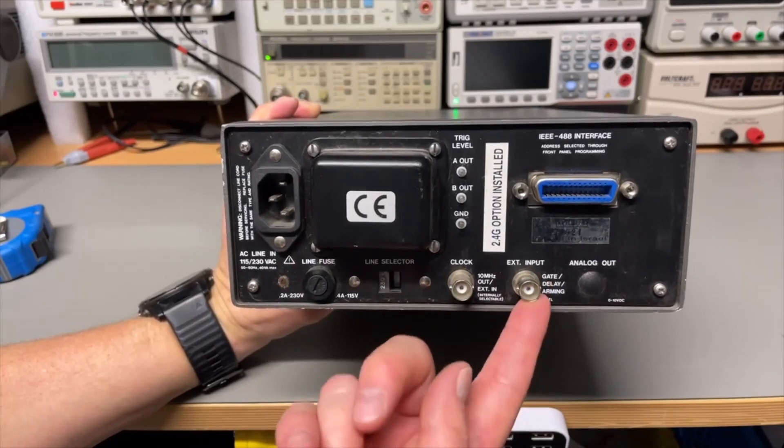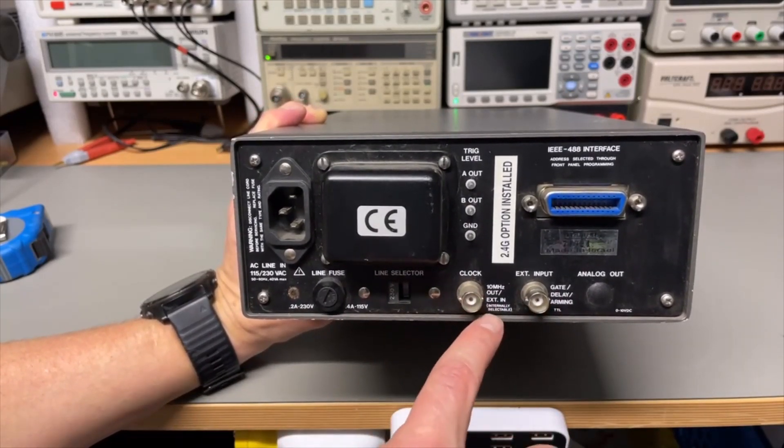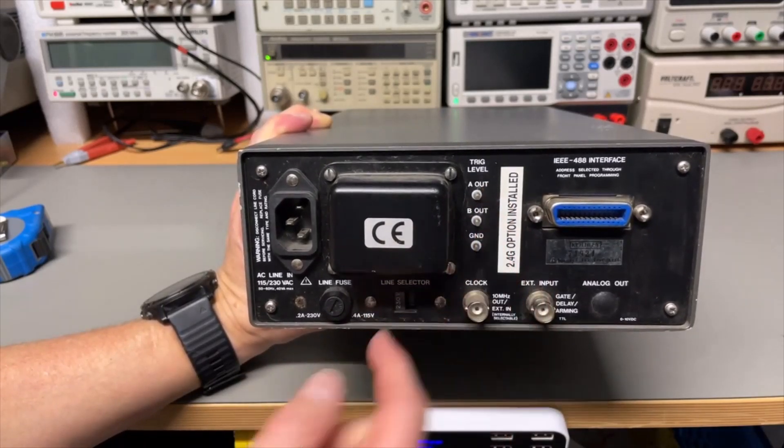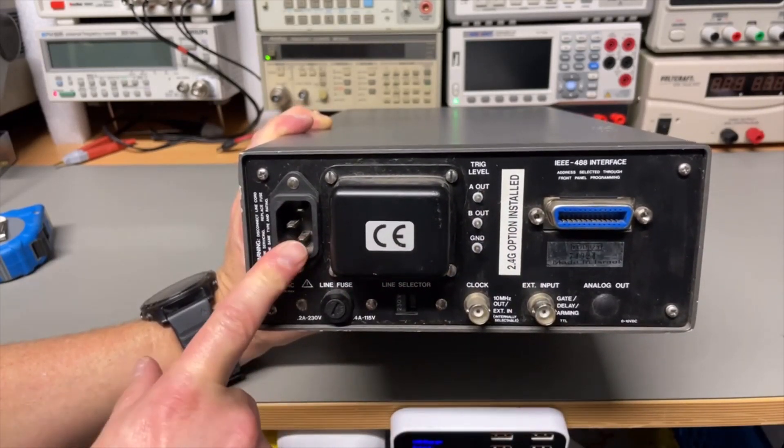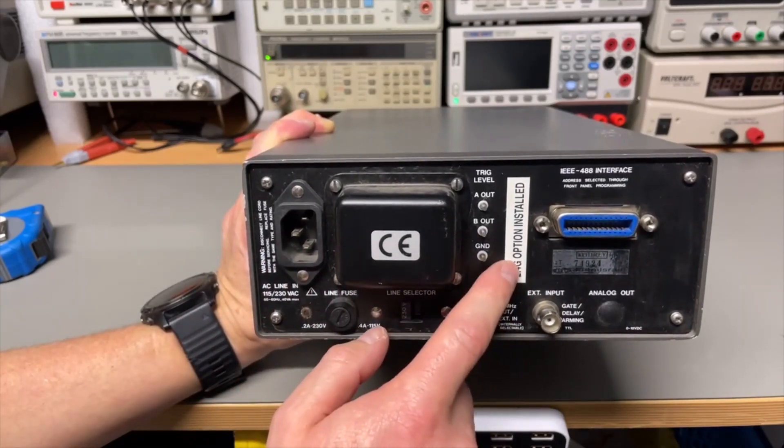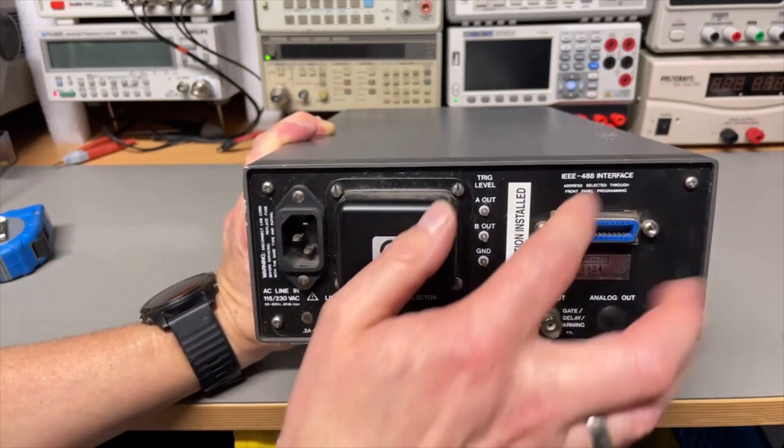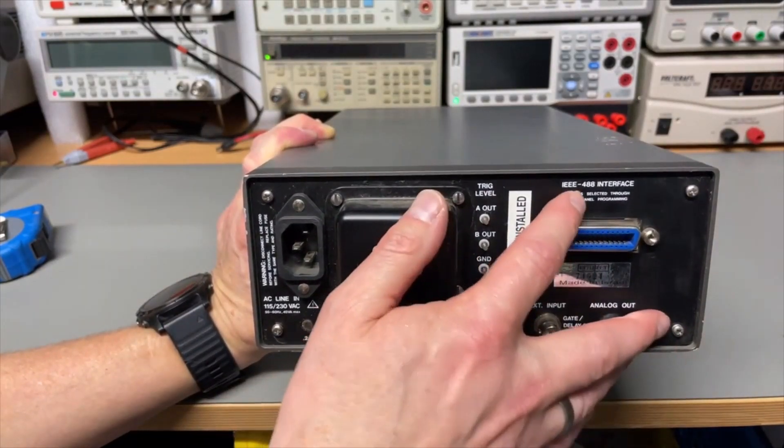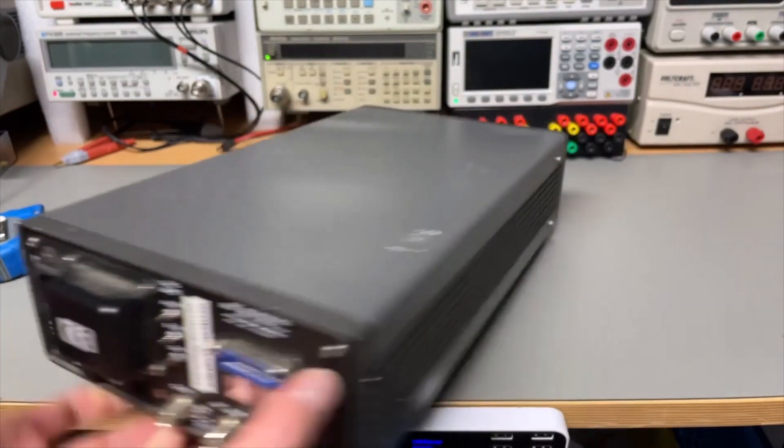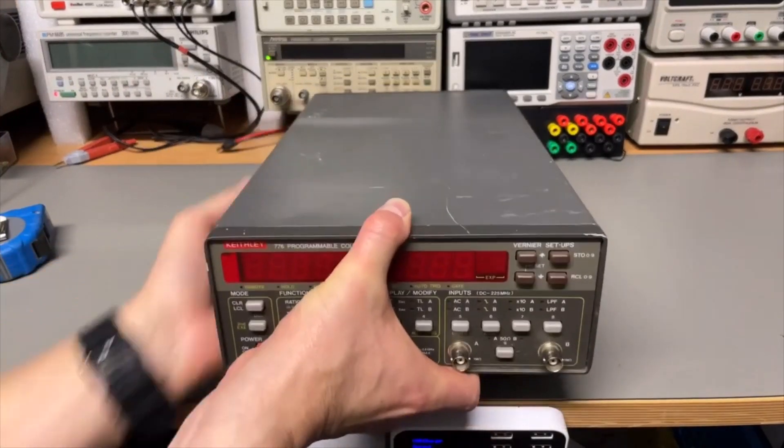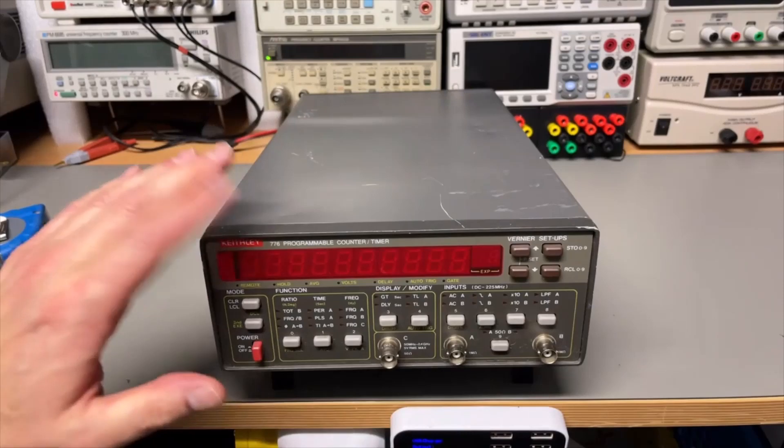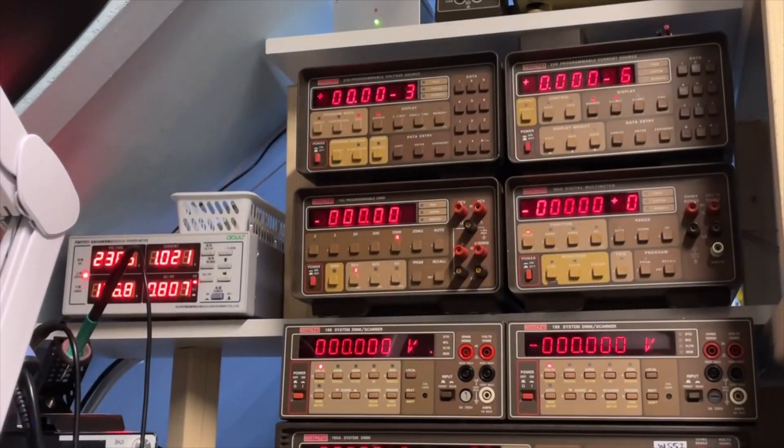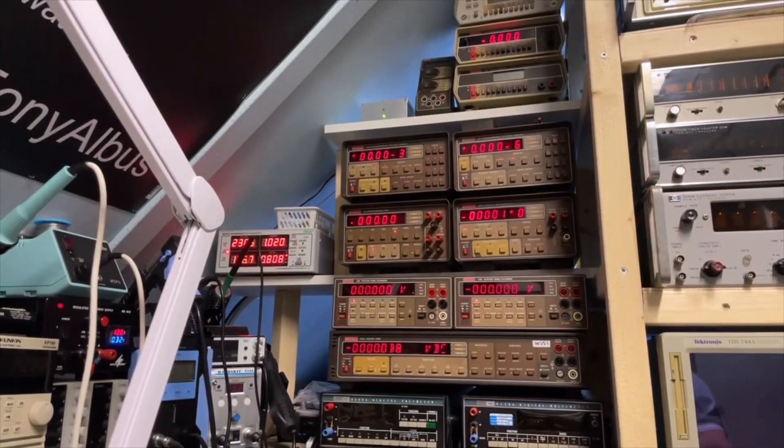External input for the gate. We have here the clock out or in, internally selectable. I think you can select 5 or 10 MHz and then if you want it in or out. Some trigger outputs. It's set to 230, normal European plug. It says it has the 2.4 option installed, and that is great because then you also have the high stability TCXO which makes it more stable. We have the IEEE interface.